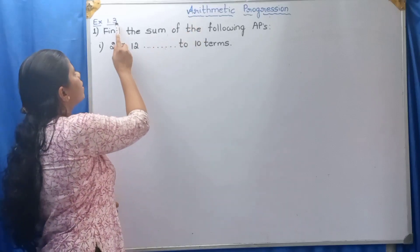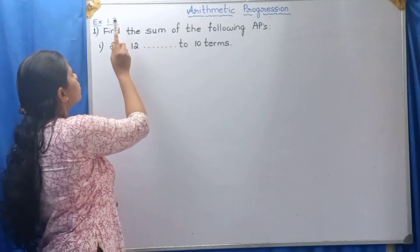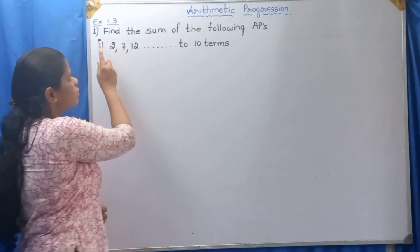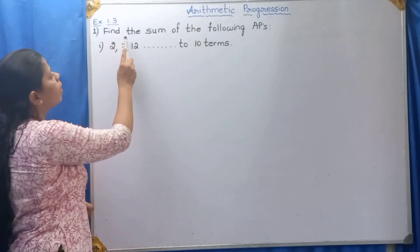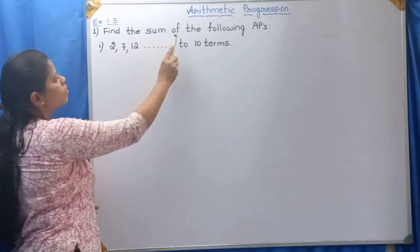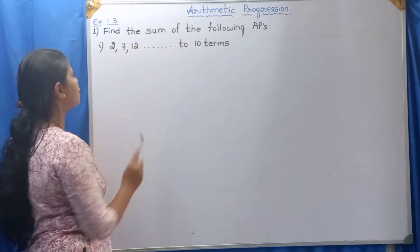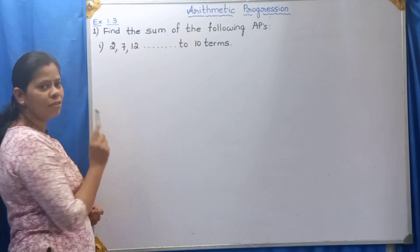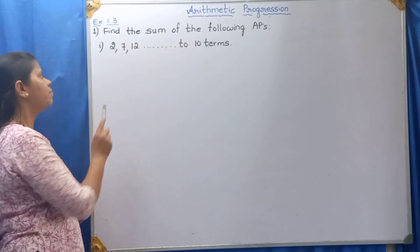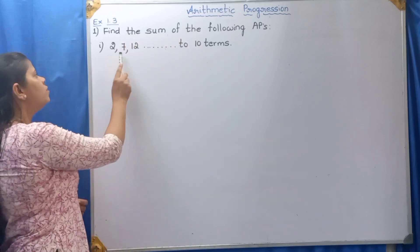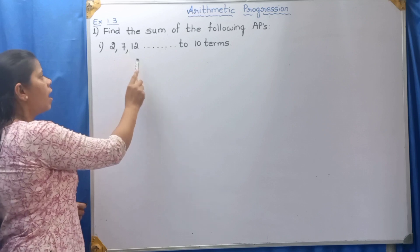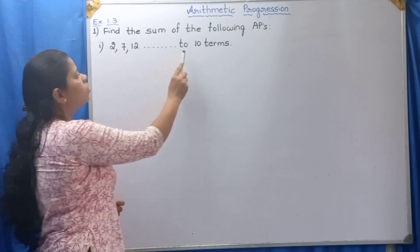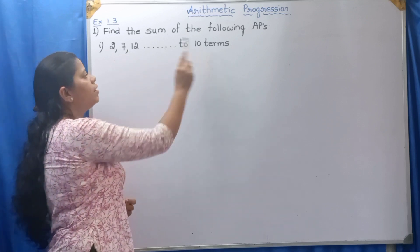Arithmetic Progression. Exercise 1.3, first main question: find the sum of the following APs. The first question: 2, 7, 12, and so on, up to 10 terms.